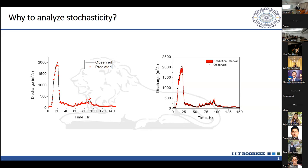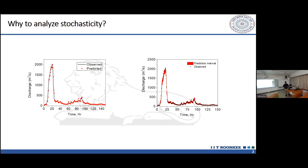Why do we need to analyze stochasticity? If we could model stochasticity in our models — and we work on different models — most of the time we ignore it because if the model itself is highly complex, it takes a huge amount of computation and a lot of mathematics. So most of the time we assume and want to make our model simpler in terms of calibration and simulation. But considering stochasticity is very important, especially for hydrological problems, because hydrology is highly stochastic in nature.